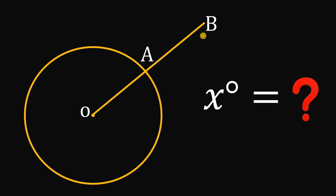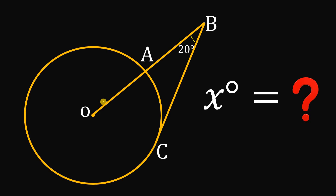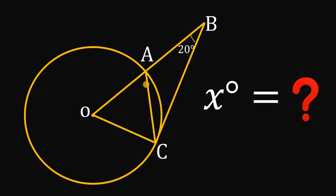Now let's draw a tangent BC — segment BC is tangent to circle O. This angle right over here is 20 degrees. Then let's connect O and C, so we have radius OC. Let's also connect A and C, so we have segment AC. This angle right over here, let's call this X.